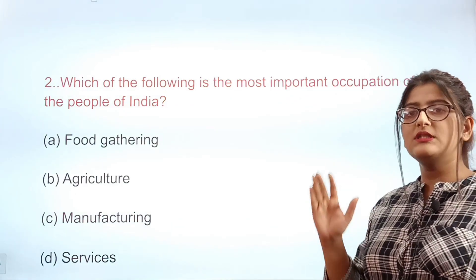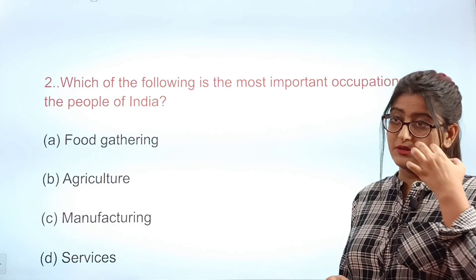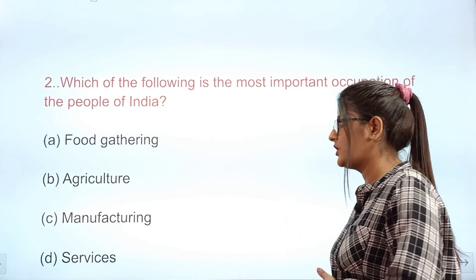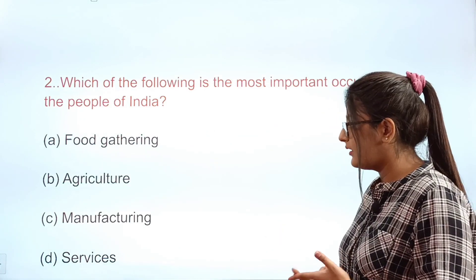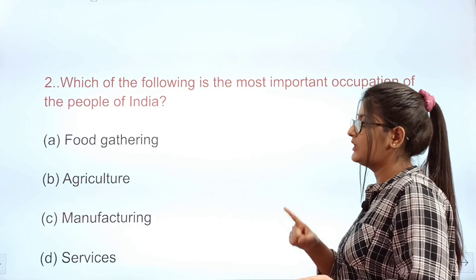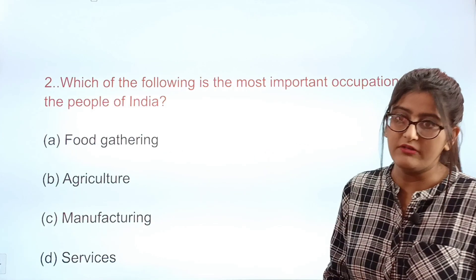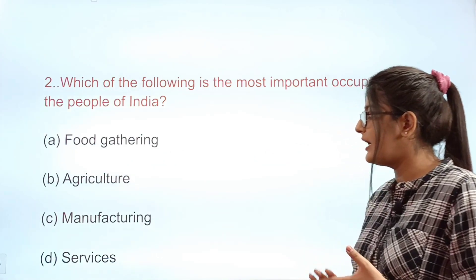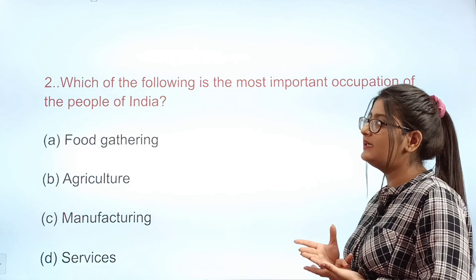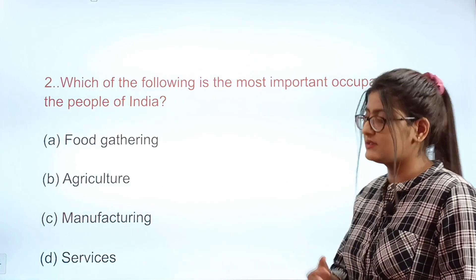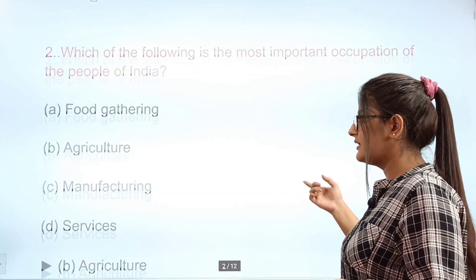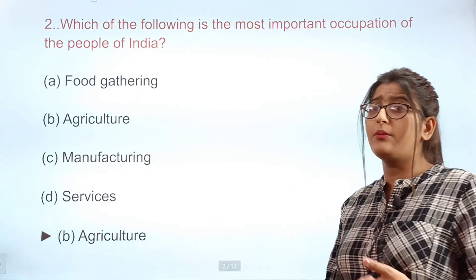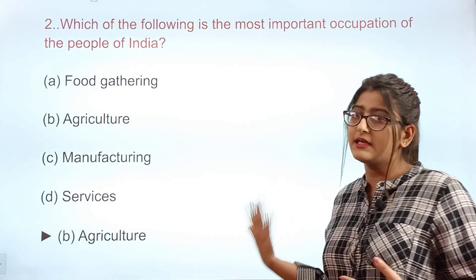Question 2: Two-thirds of Indians are engaged in which activity? Options: A food gathering, B agriculture, C manufacturing, D services. The correct answer is B — agriculture. Our two-third population is involved in agriculture as the primary activity.